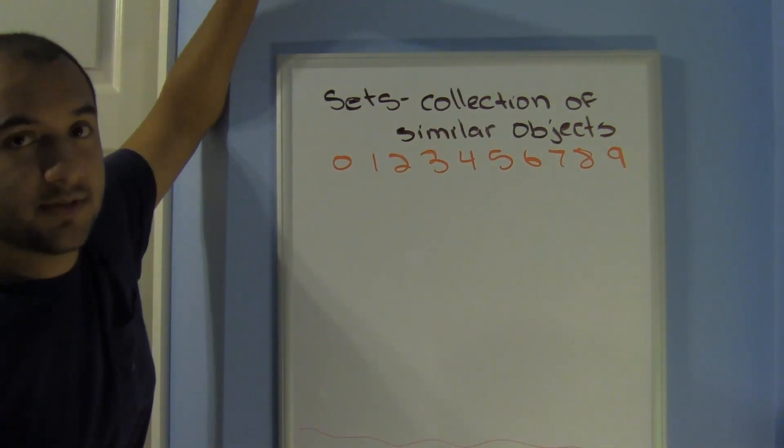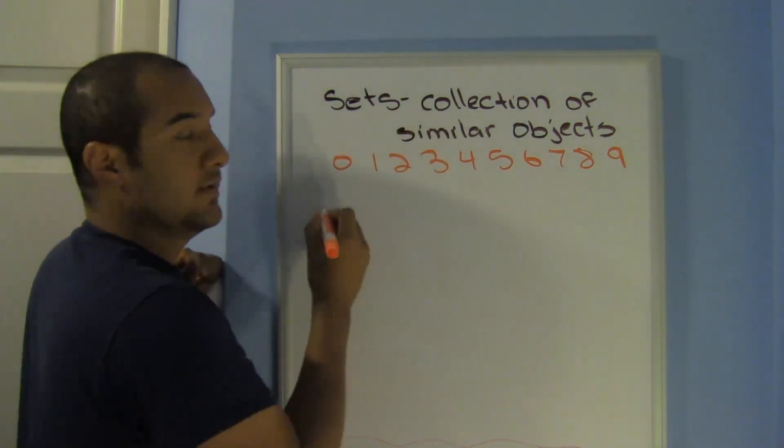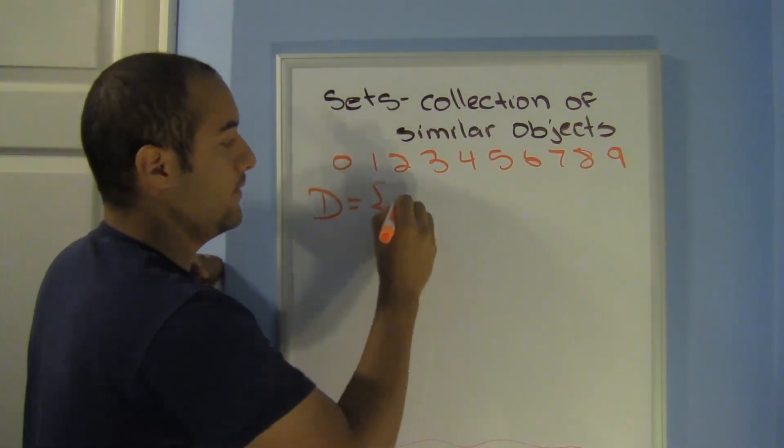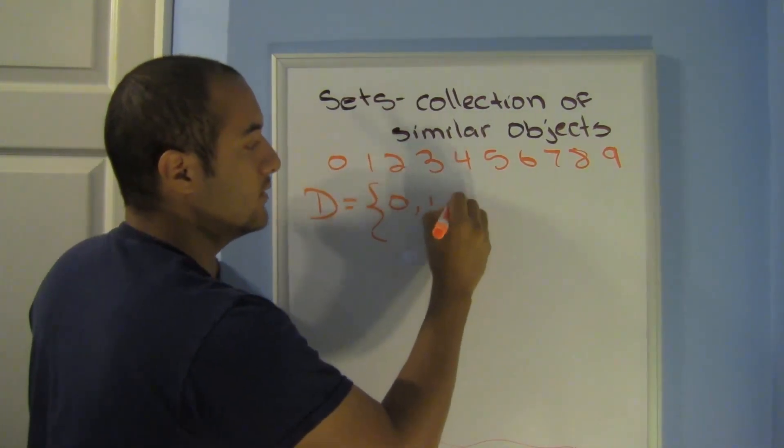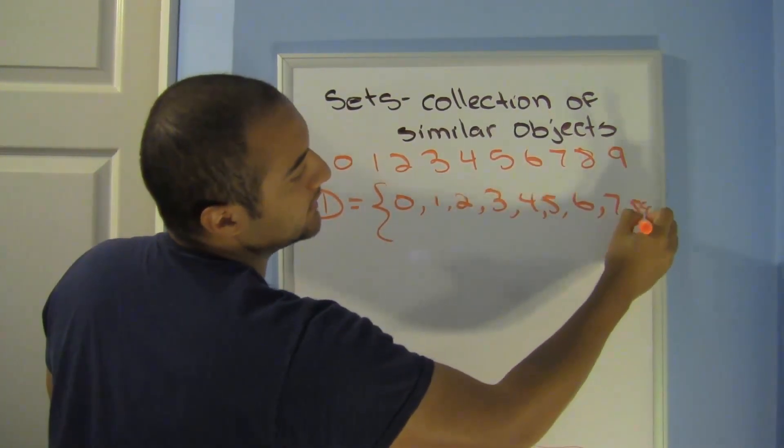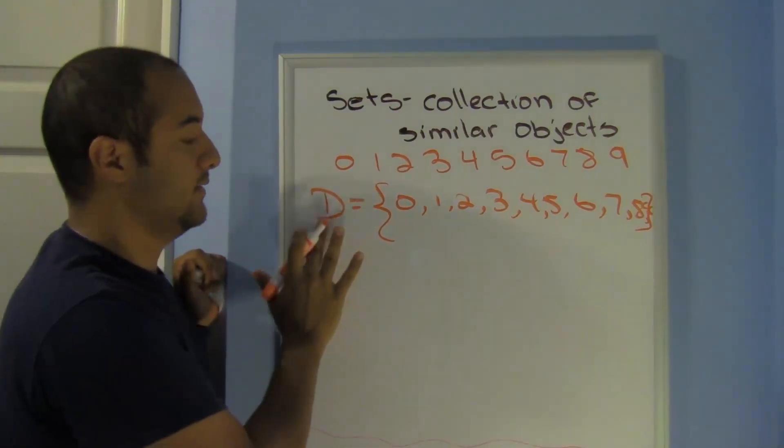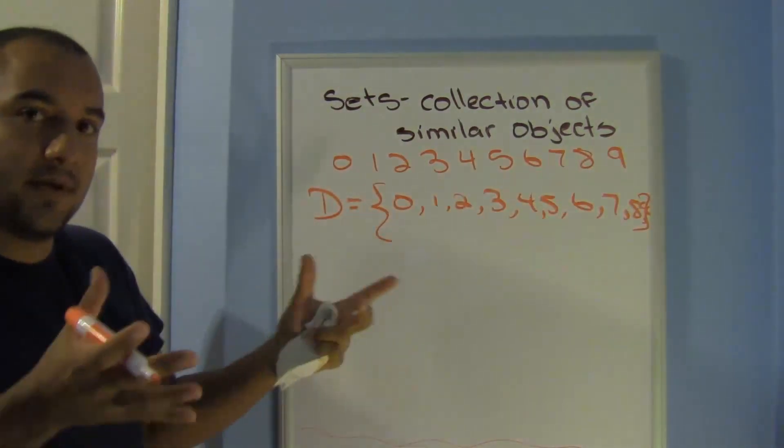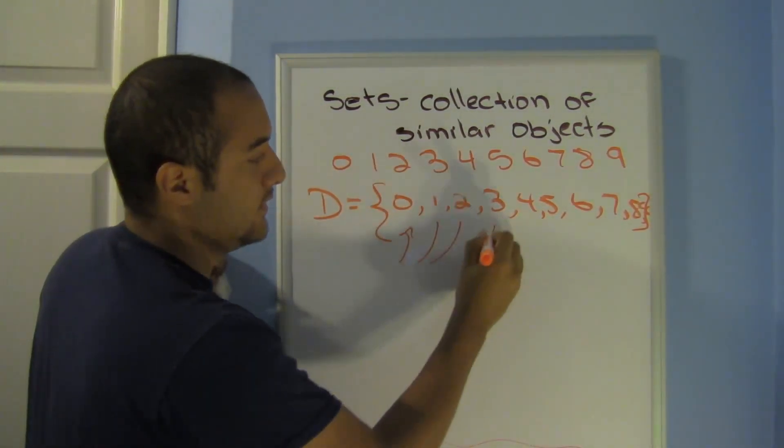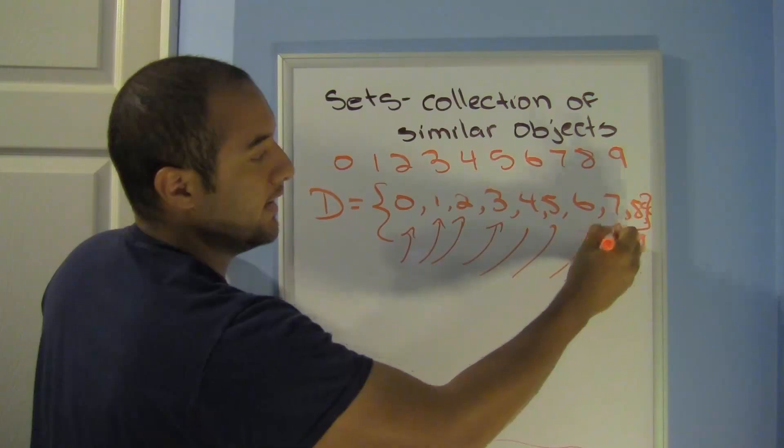Sets are a collection of similar objects. So here I have the digits 1 through 9. You can use this set D equal to 0, 1, 2, 3, 4, 5, 6, 7, 8, 9. So here we're saying D is a set of these numbers. I've collected these numbers. All of these digits, of course separated by comma, these are all elements.